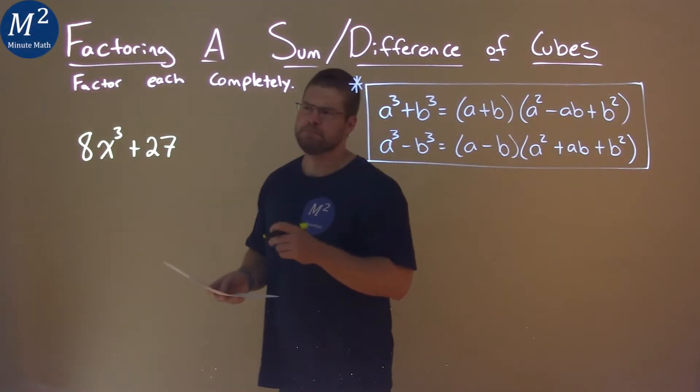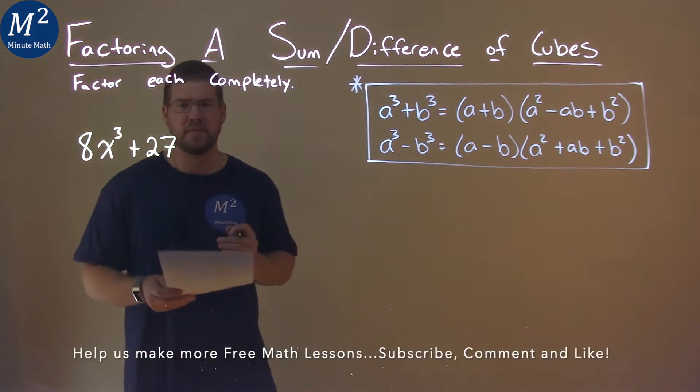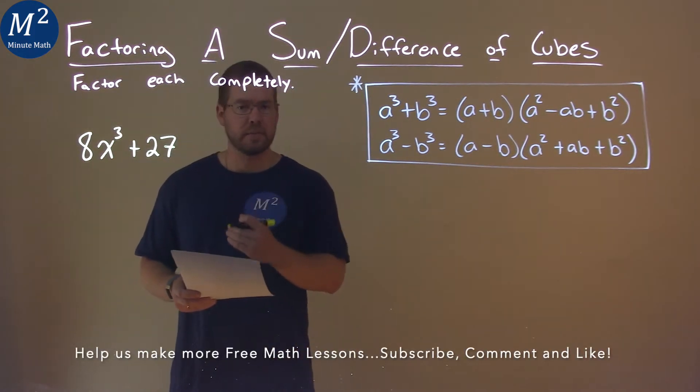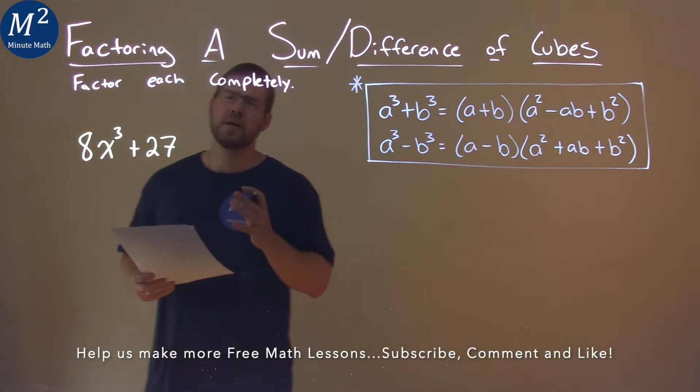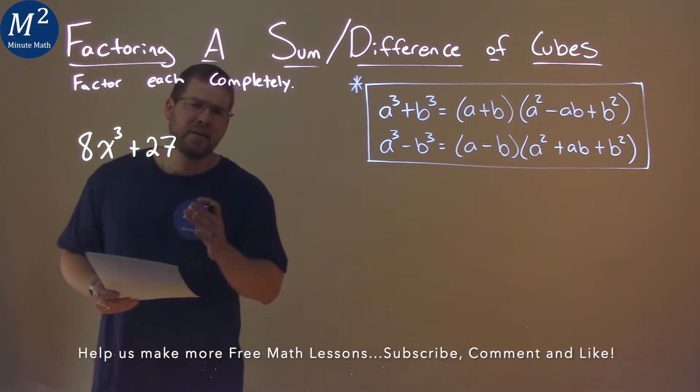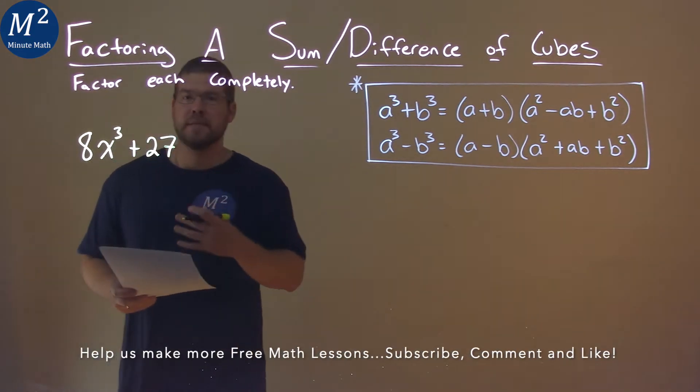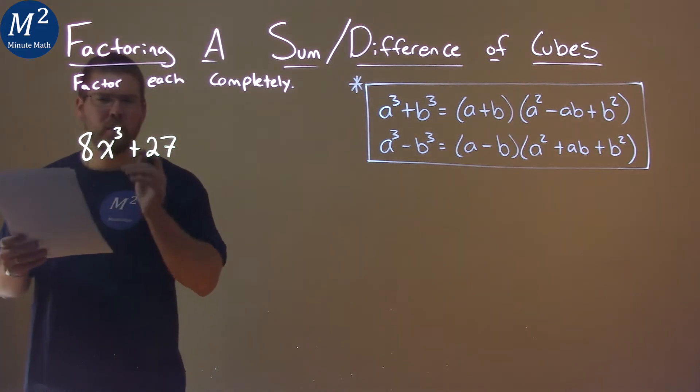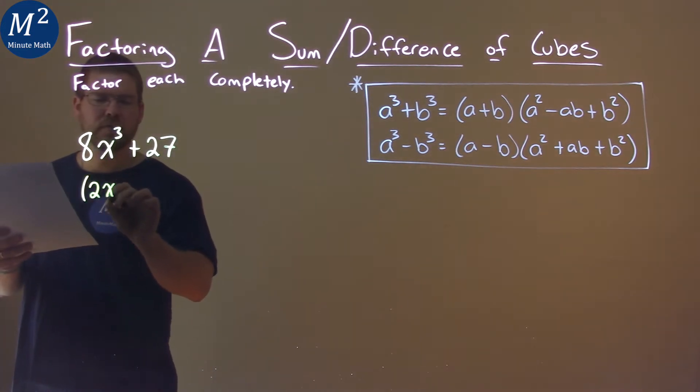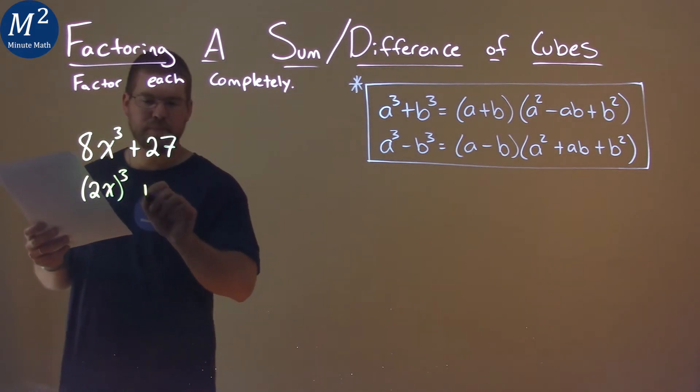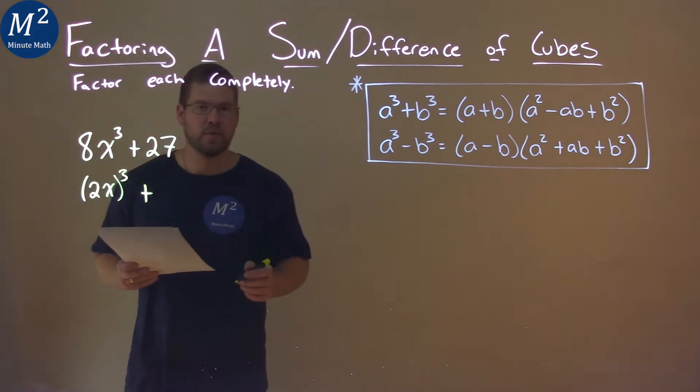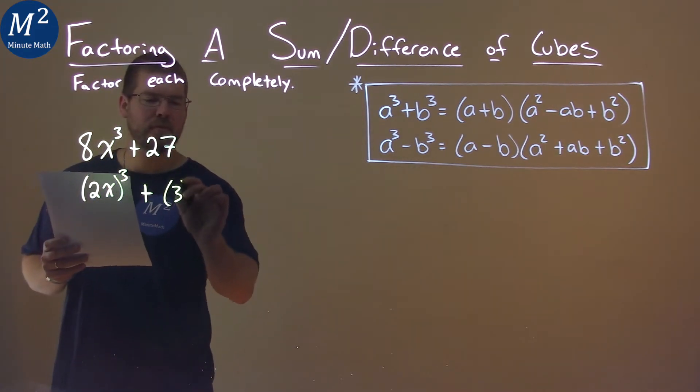We're given this problem right here, 8x cubed plus 27, and we need to factor this completely. Well our goal here to use the sum of cubes is to find two parts where each part is cubed. So 8x cubed we can write this to be 2x all cubed. 2 cubed is 8 and x cubed is x cubed. 27 has the same goal. 27 is the same as 3 cubed.